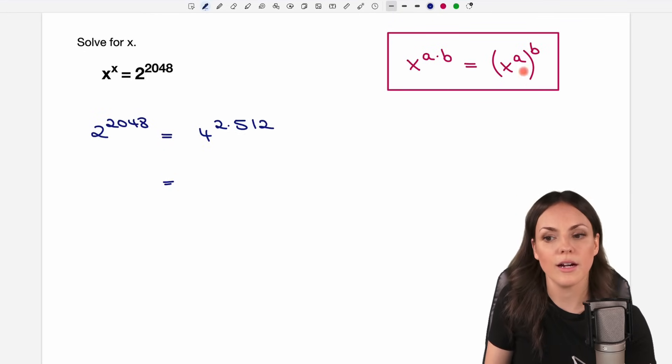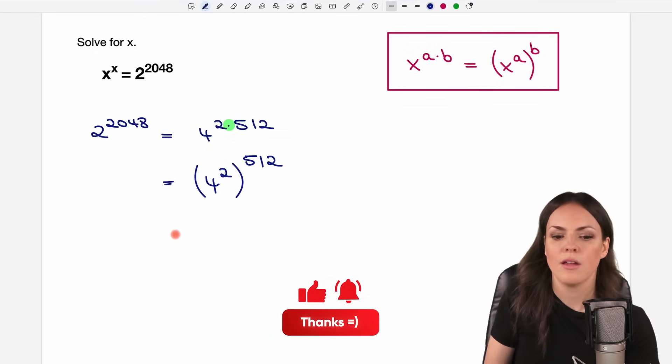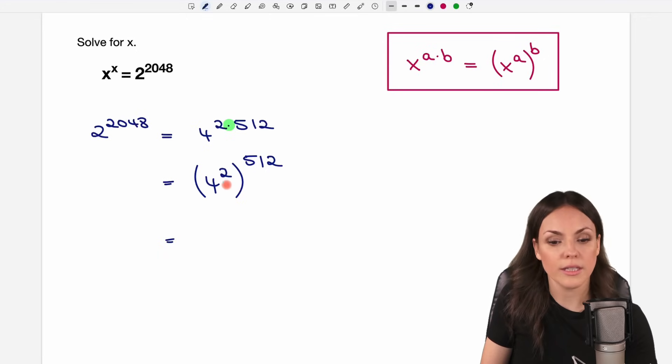So now we can apply our rule again. We have a product in our exponent, so we take the base and raise it to the first part of the product, we raise it to the power of 2, and raise the whole thing to 512. Now again we can calculate this here. 4 to the power of 2 just equals 16, so I erase this and write my 16 as a base here.